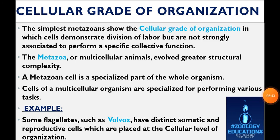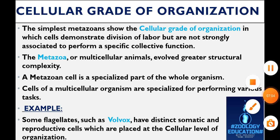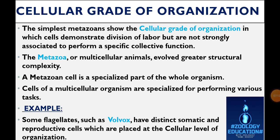Moving on to our second: cellular grade of organization. The simplest metazoans show a cellular system in which cells demonstrate division of labor but are not strongly associated to perform a specific collective function. The metazoan, or multicellular animal, involves greater structural complexity — multicellular meaning having two or more cells. A metazoan cell is a specialized part of the whole organism, with cells specialized for performing various tasks. For example, some flagellates, such as Volvox, have distinct somatic and reproductive cells, which are placed at the cellular level of organization.